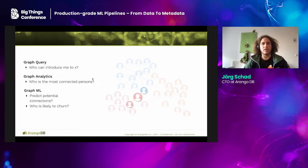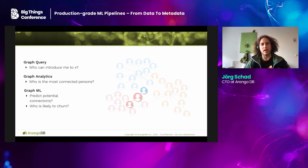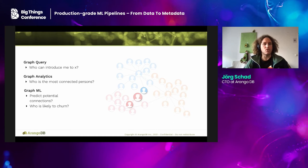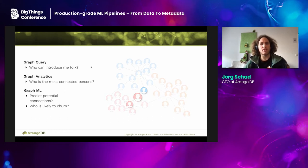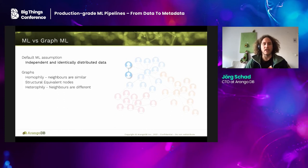What are the different stages? We can have simple graph queries — for example, if you're LinkedIn and want to show a user who could give them an introduction to another user, that's a simple graph query any graph database can handle. Then graph analytics: who is the most connected person, who are the influencers, recommender systems. And then graph machine learning, which builds statistical models to do predictions such as which edges are missing in our graph, or who is likely to churn — as in the social network example.